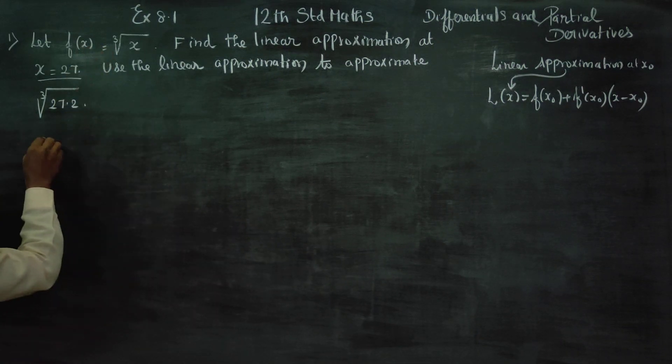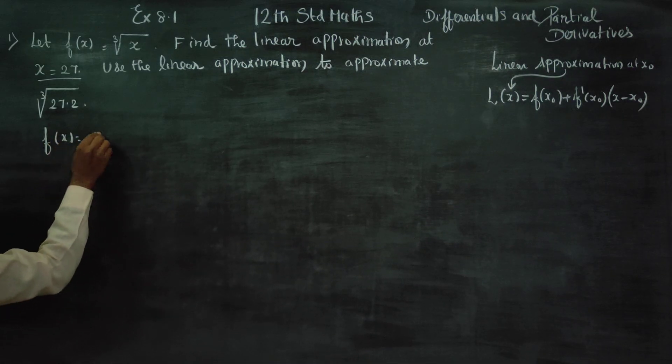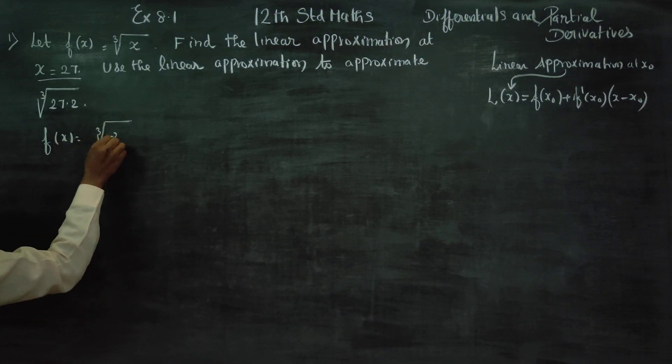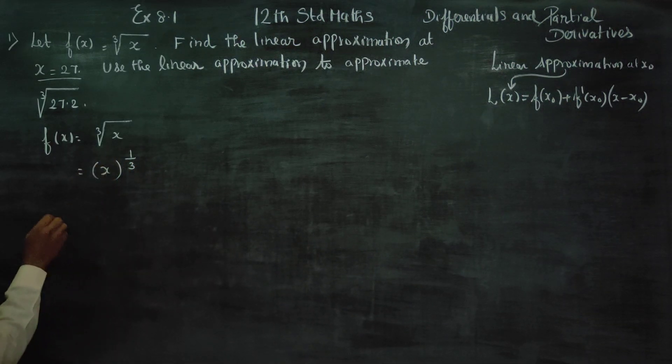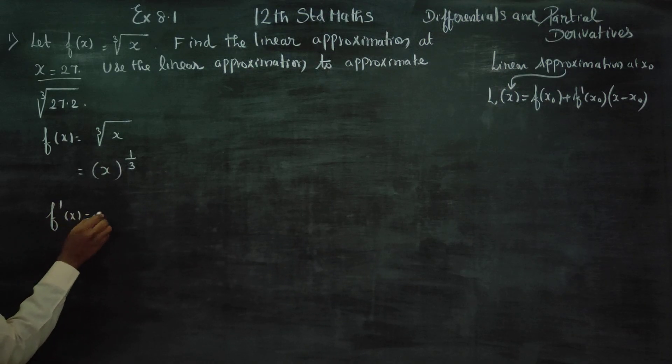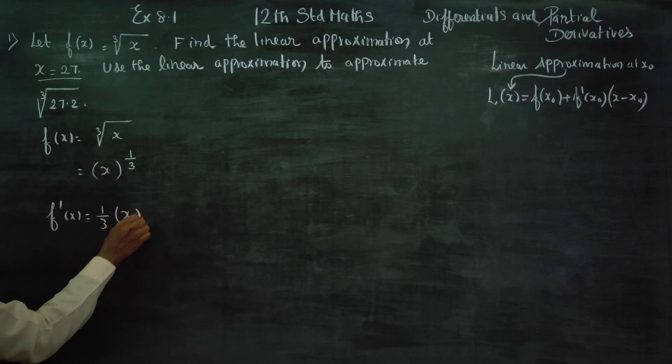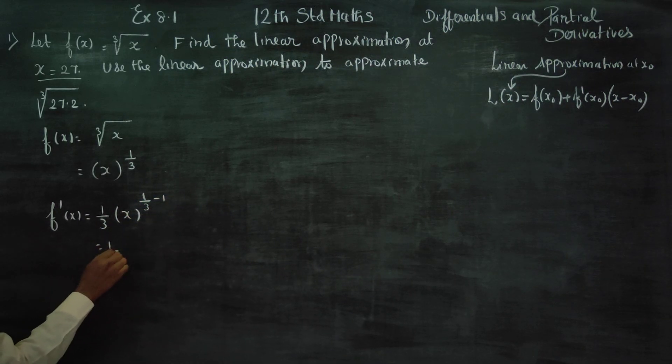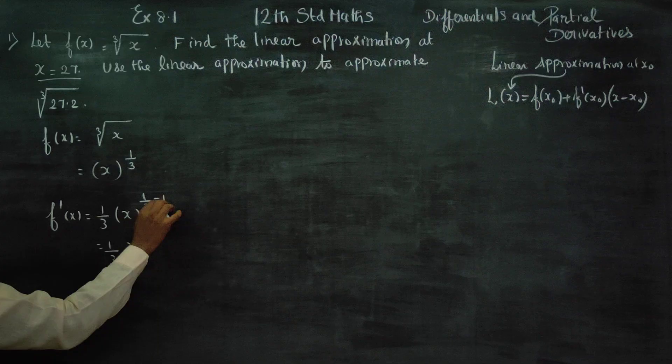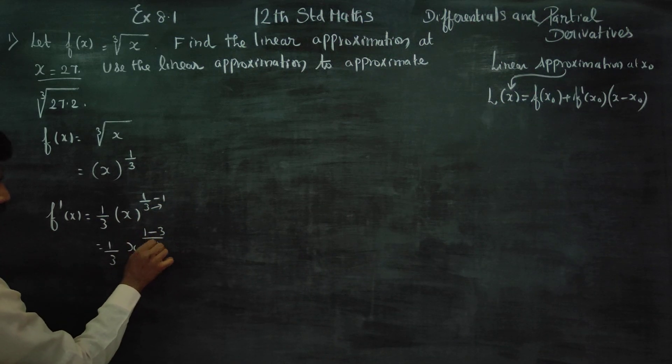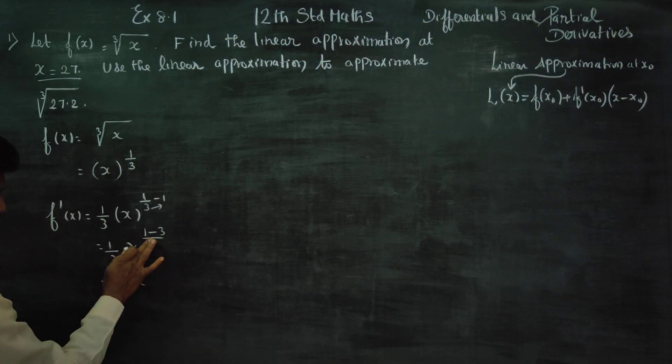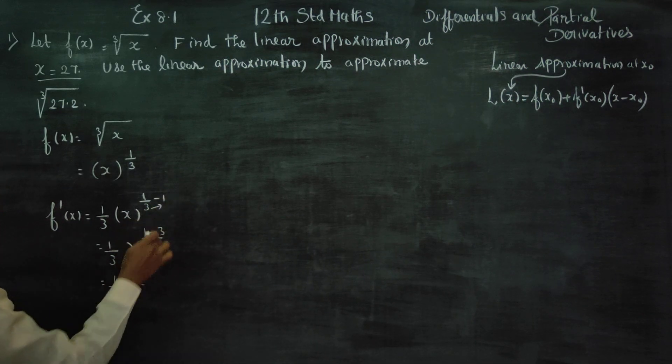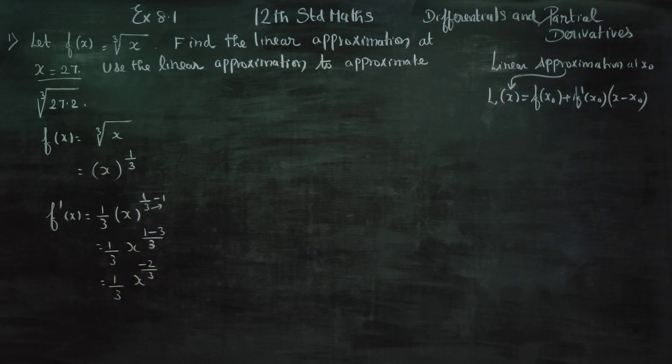First, I will enter into this. My f(x) equals cube root of x. Cube root of x can be written as x power 1/3. Now differentiate to get f'(x): 1/3 times x^(1/3 - 1), which equals 1/3 x^(-2/3).